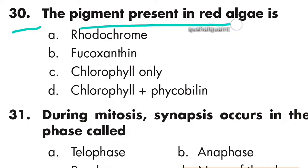Question 30: The pigment present in red algae is chlorophyll plus phycoerythrin — option D is correct.